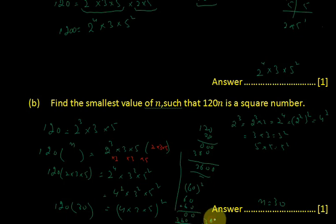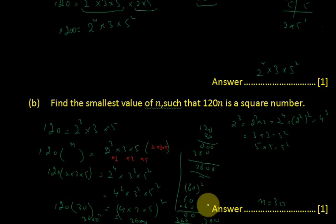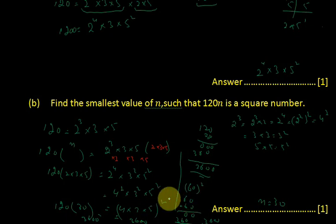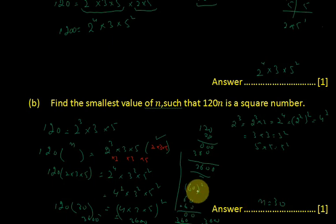The result is 3600, and 3600 is the square of 60. So n, which is basically 2 multiplied by 3 multiplied by 5, when we multiply it by 120 it becomes the square of 60. Therefore n is equal to 30.